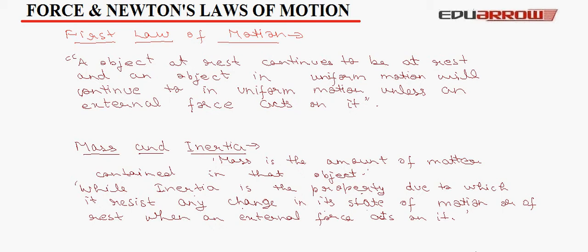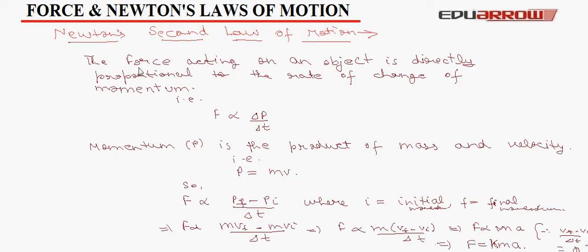Now, let us understand what the Newton's second law of motion is. First of all, we define momentum. Momentum P is the product of mass and velocity. That is, P is equal to mV. Now, we define Newton's second law of motion. It states that the force acting on an object is directly proportional to the rate of change of momentum. That is, F directly proportional to del P upon del T.